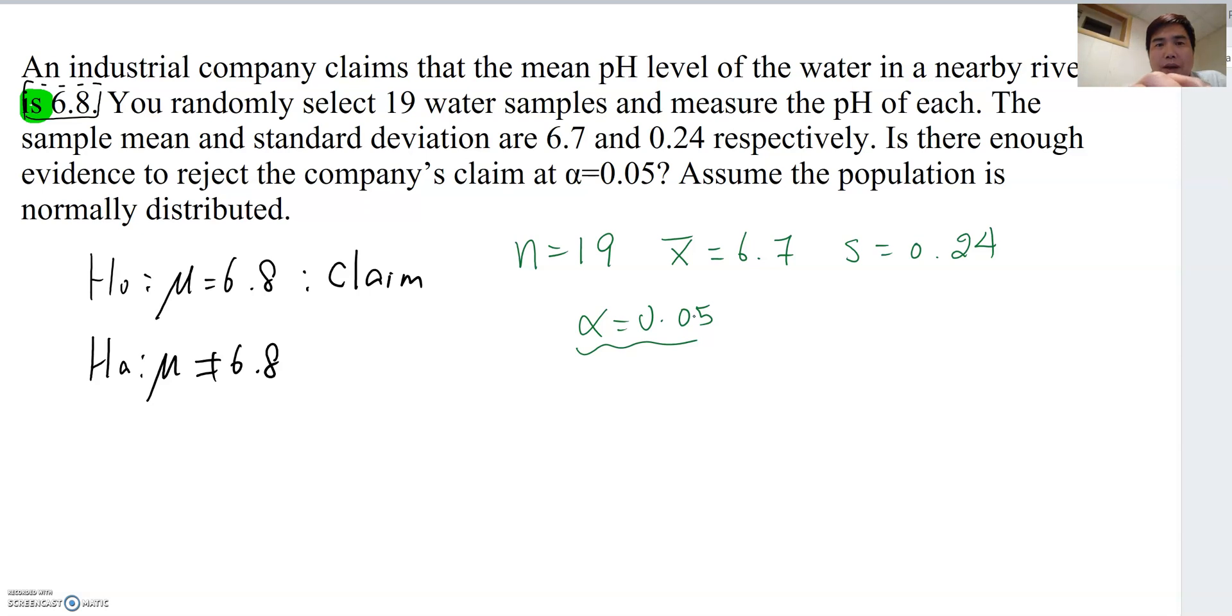In order to find T critical value, you need to find out degree of freedom, which is n minus 1. So in this case, degree of freedom becomes 18, because 19 minus 1. So I'm going to go to DF 18 and then alpha 0.05, and this is two tail, so it becomes two tail alpha in this case. Let's go to the T table.